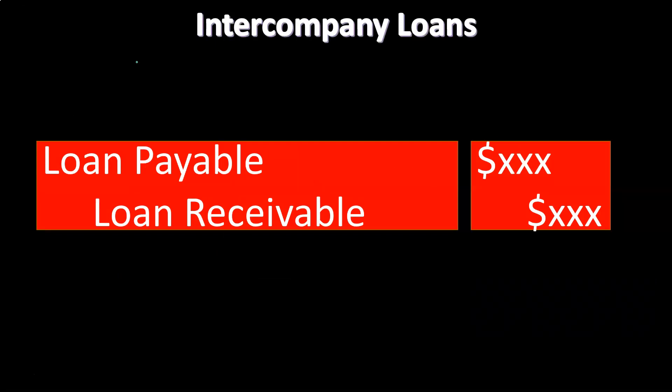Intercompany loans: if there are intercompany loans, it's fairly straightforward to take off the loan amount. You would have the loan payable on one side of the books — whether it be parent or subsidiary — and the receivable on the other side. The loan payable, being a liability account, we would remove it by debiting it. The receivable is an asset account with a debit balance on either the parent or the subsidiary, and we would take it off the books with a credit.